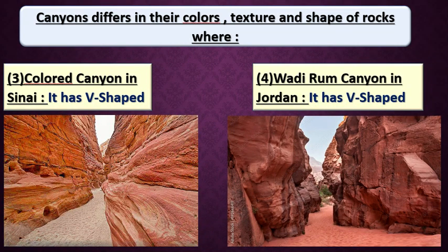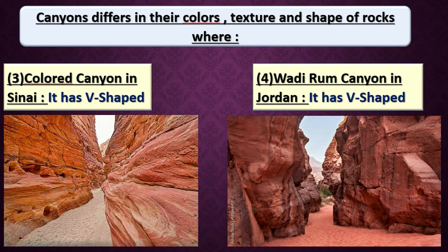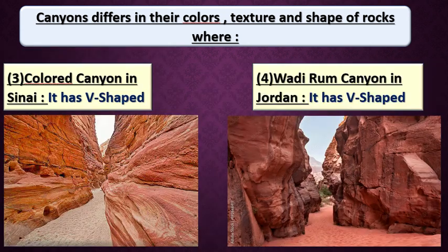The last two canyons have a V-shape - like the letter V. Look at these pictures. We have the Colored Canyon in Sinai, Egypt, which has a V-shape, and Wadi Rum in Jordan. Both of them have a V-shape. So our four examples are: Wadi Nahr in Oman (brown and black), Small Canyon in Thailand (reddish color), Colored Canyon in Sinai, and Wadi Rum in Jordan - both with a V-shape.